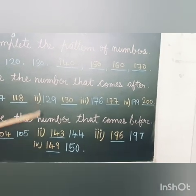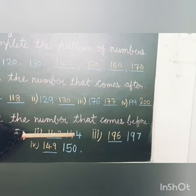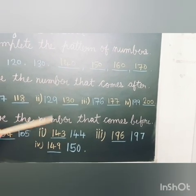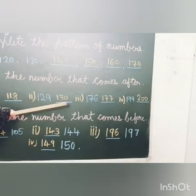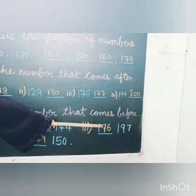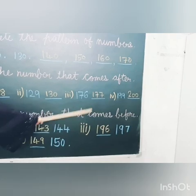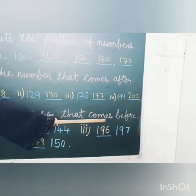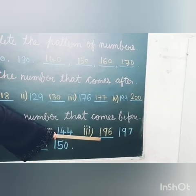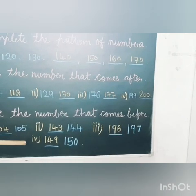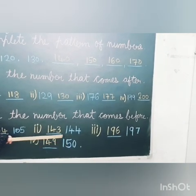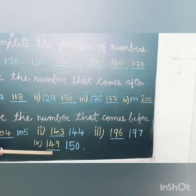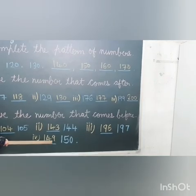Abhi aap log answer dooge. Number 2: 144. What will become before 144? 143. Good. Number 3: 197. What will become before 197? 196. Good. Number 4: 150. What will become before 150? 149. Good.